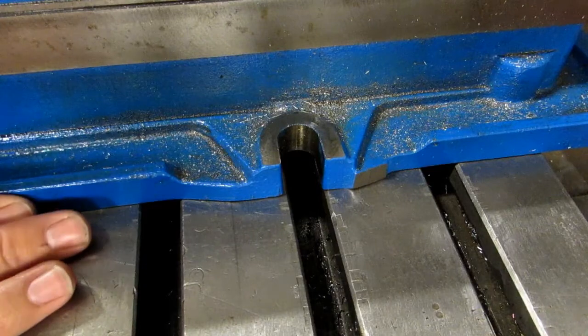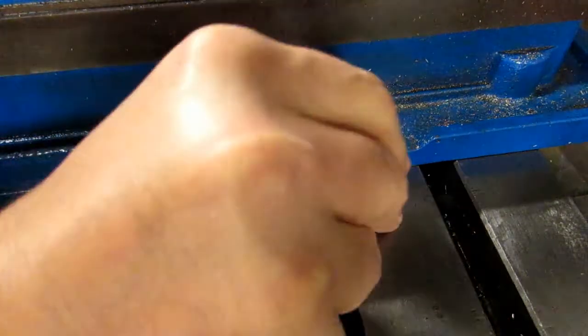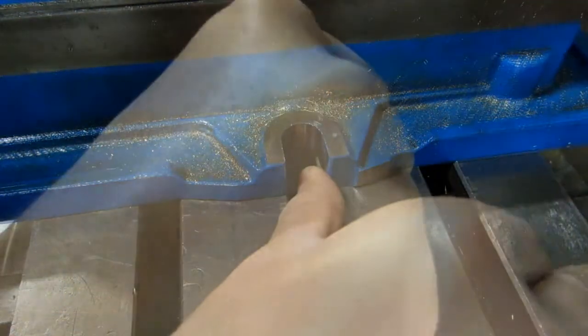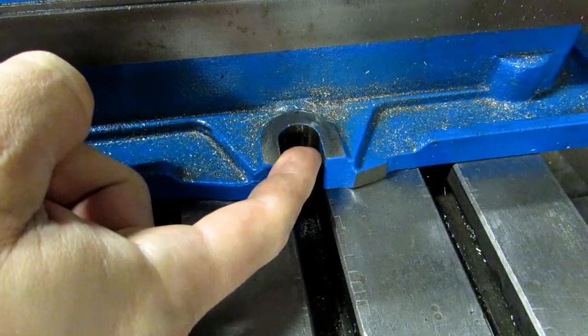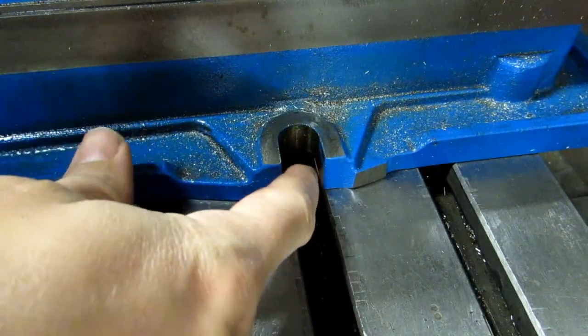So when I put the vise on initially, what I'll do is put my thumb down in the T-slot. But I will line up the back side of the slot on the vise with the edge of the T-slot.